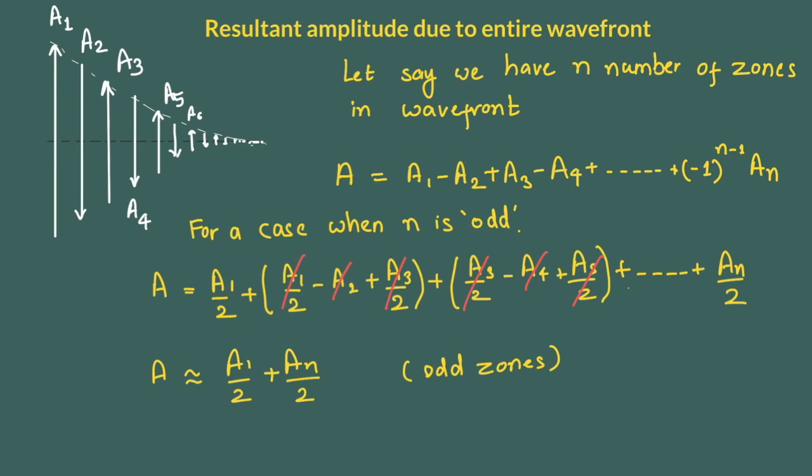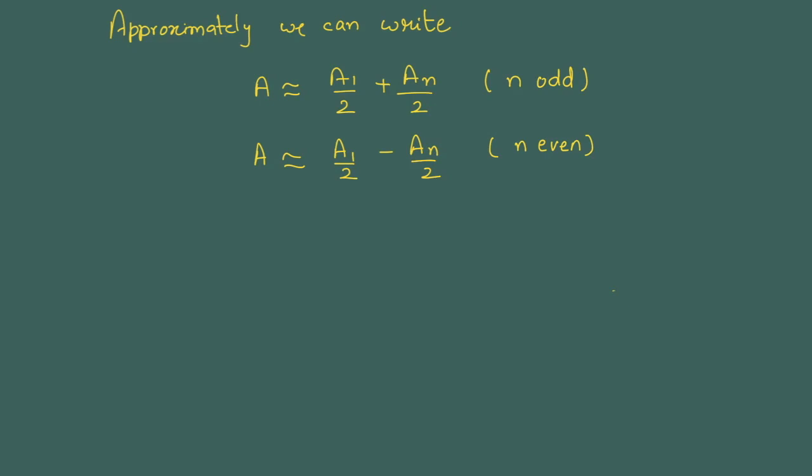If we try and calculate the same net amplitude if the number of zones are even then we will get the result as a1 by 2 minus a n by 2. So when it is odd it is plus a n by 2 and when it is even it is minus a n by 2. If n is really small then odd number of zones give rise to a bright point and even number of zones give rise to a dark point.